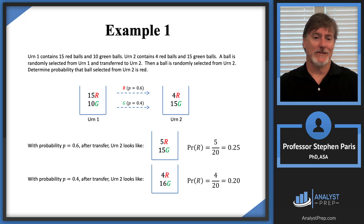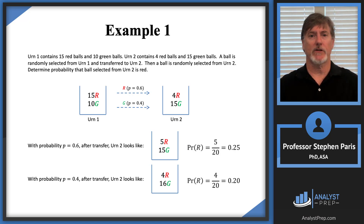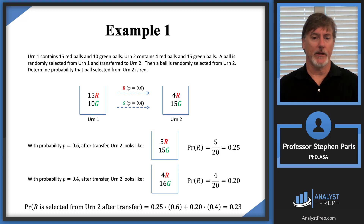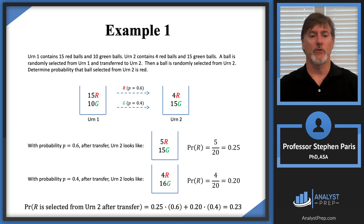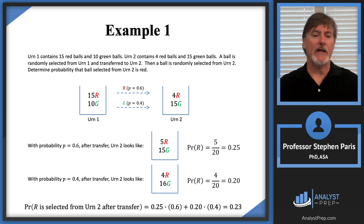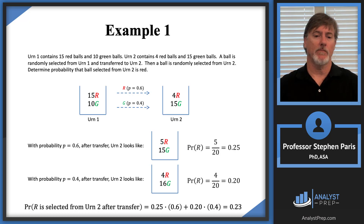It's just a weighted average, which is what the law of total probability is. The probability that a red ball is selected from urn 2 after transferring a ball from urn 1 would be 0.25 times 0.6, plus 0.2 times 0.4. We weight the values 0.25 and 0.2 with the weights 0.6 and 0.4, and we get 0.23.